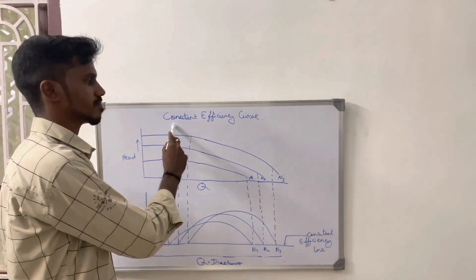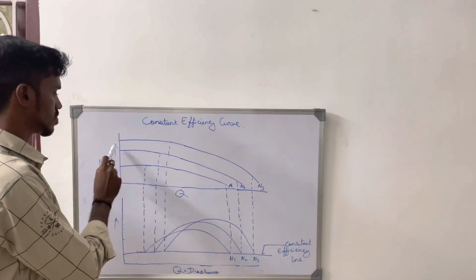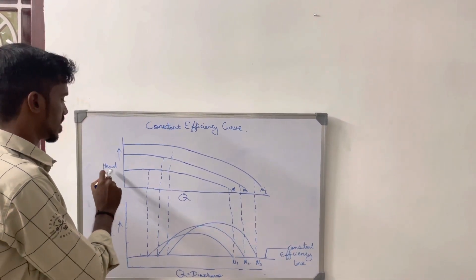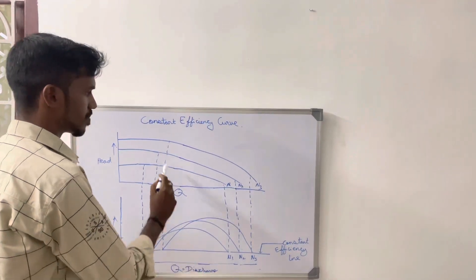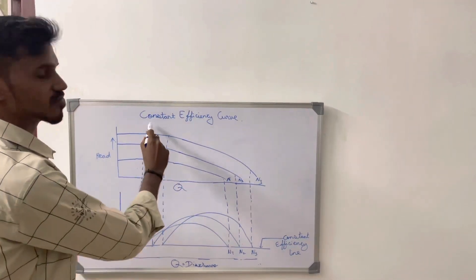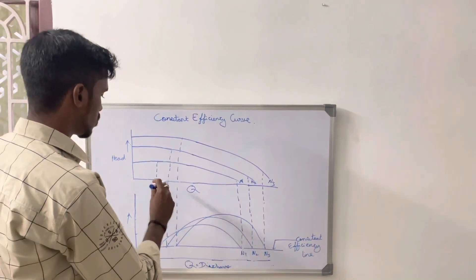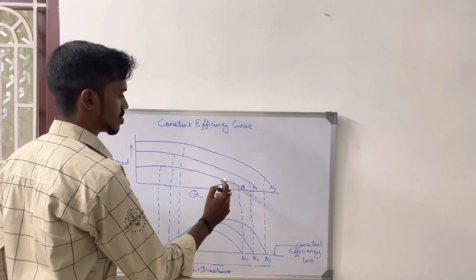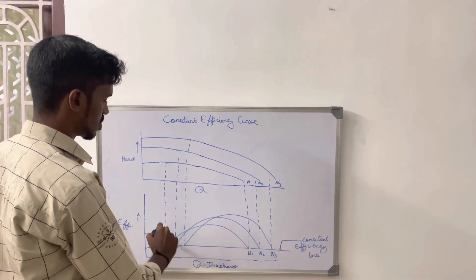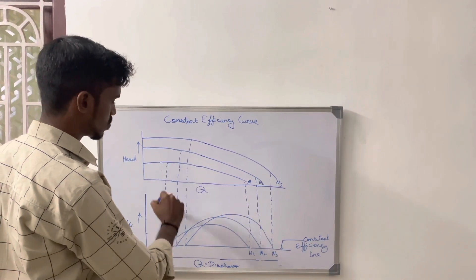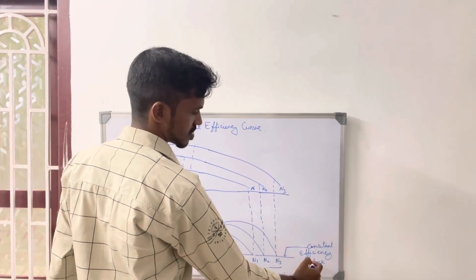This is the constant efficiency curve. First we have to draw the graph of head versus discharge and efficiency. By comparing these two graphs, we can find the constant efficiency line. If we consider n1, n2, n3 - that means speed - and if we mark these on the two graphs, we can find the constant efficiency line.